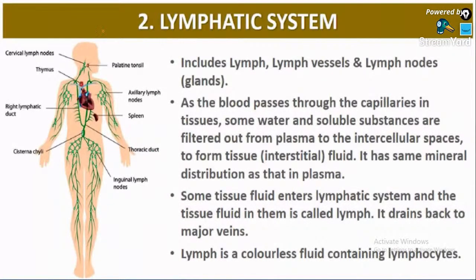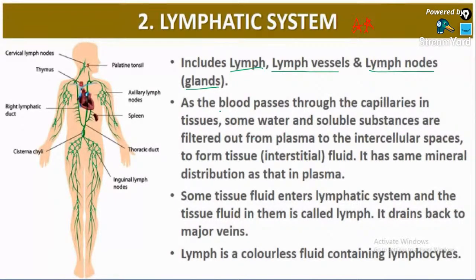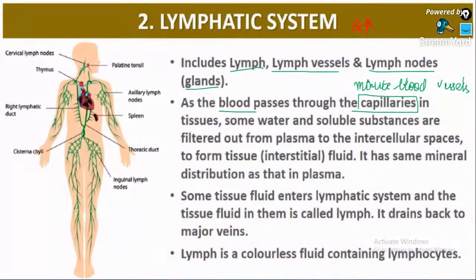Next is the lymphatic system. The lymphatic system includes lymph, lymph vessels, and lymph nodes. As blood passes through the capillaries in the tissue, some water and soluble substances are filtered out from the plasma to the intercellular spaces to form tissue fluid or interstitial fluid.